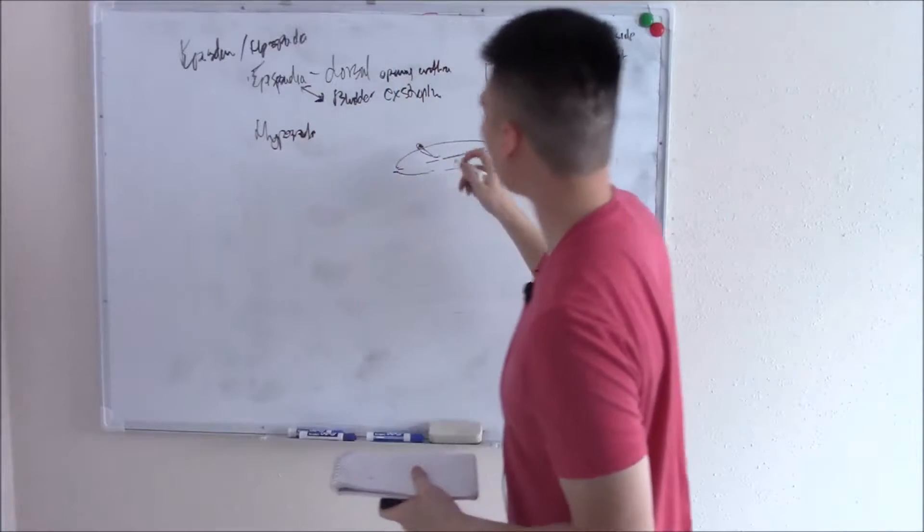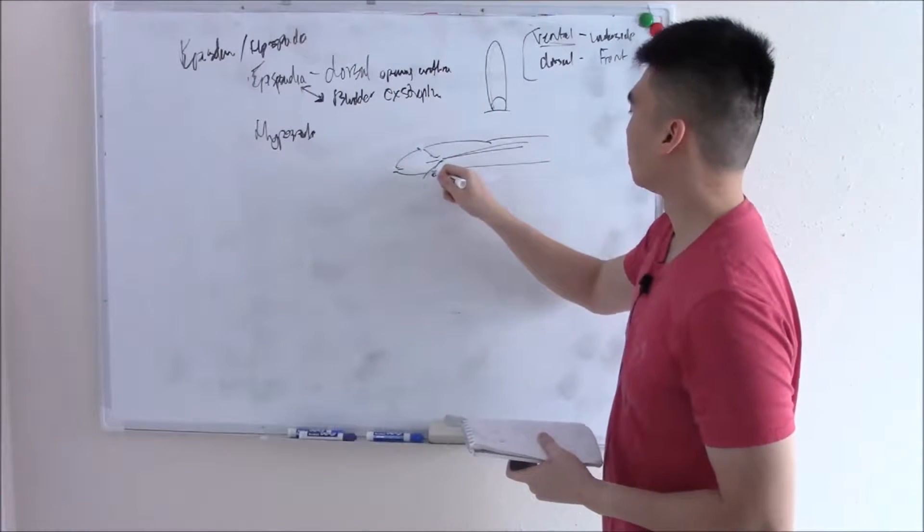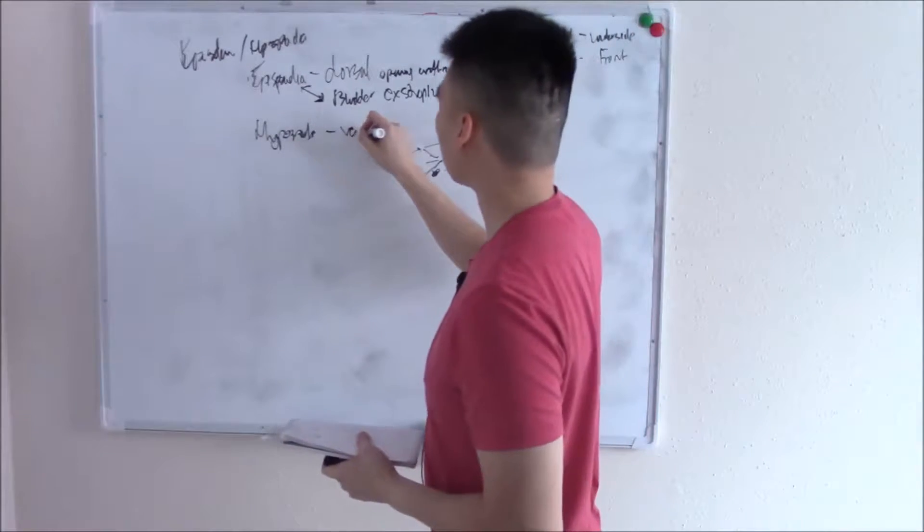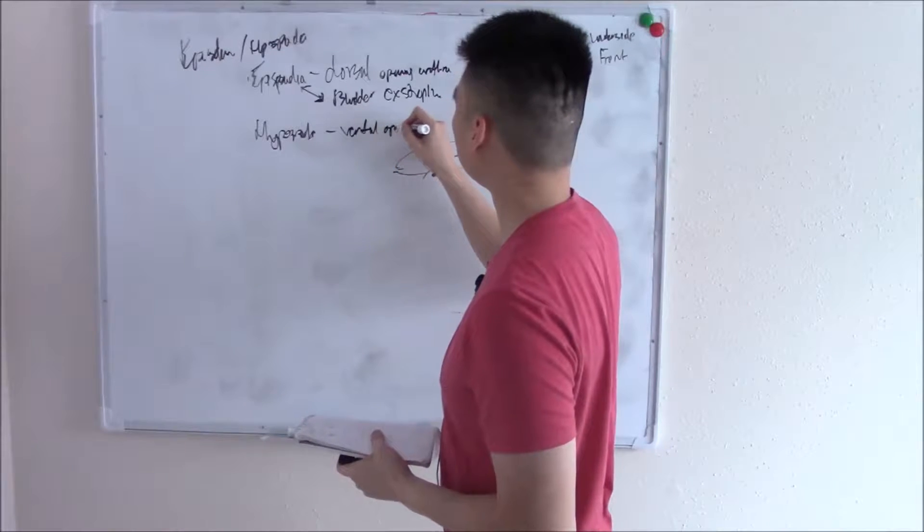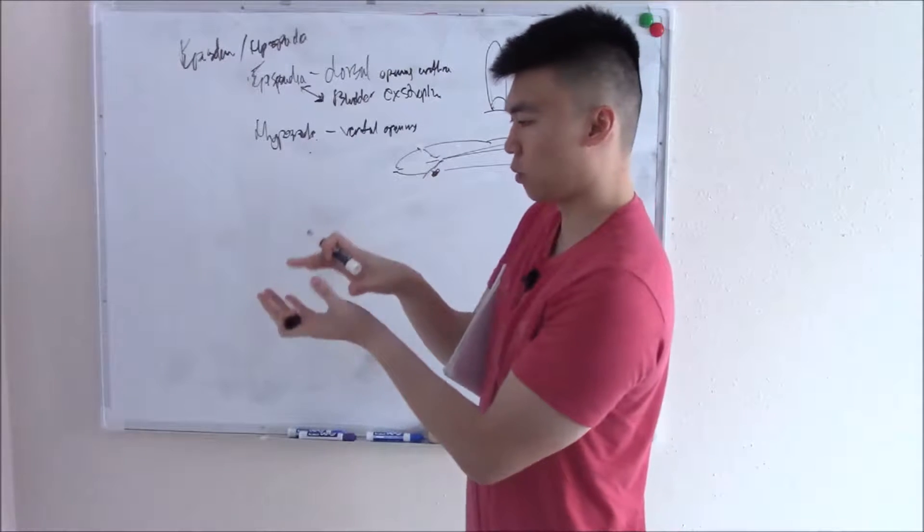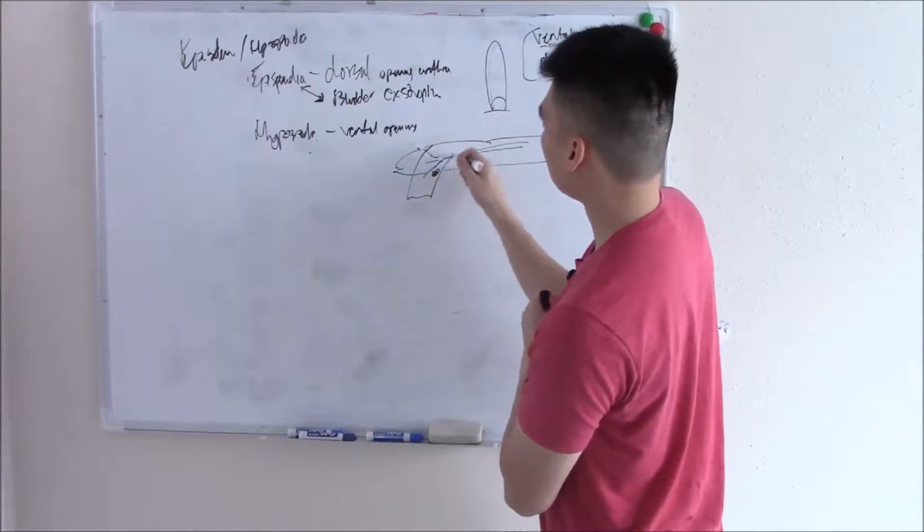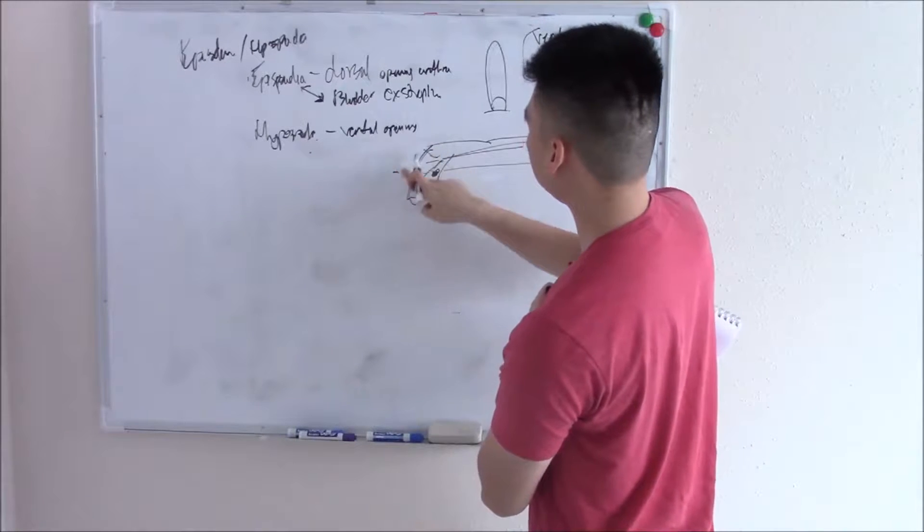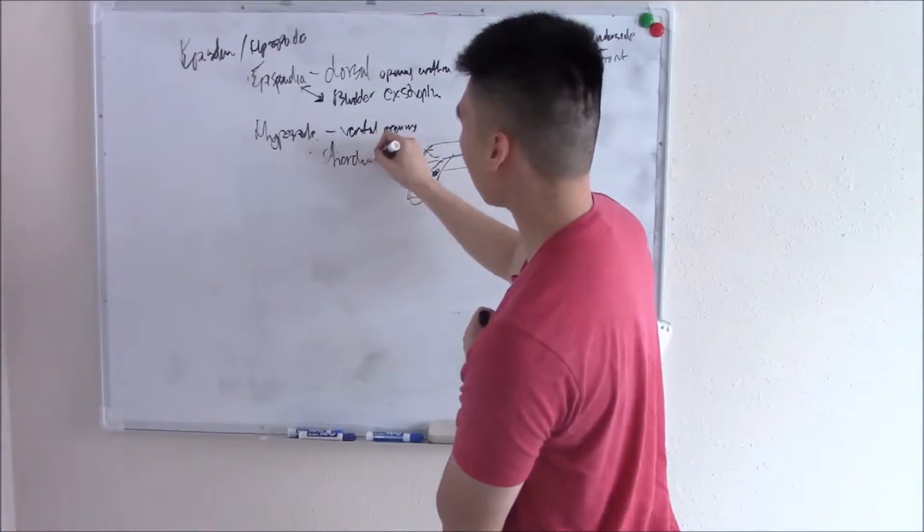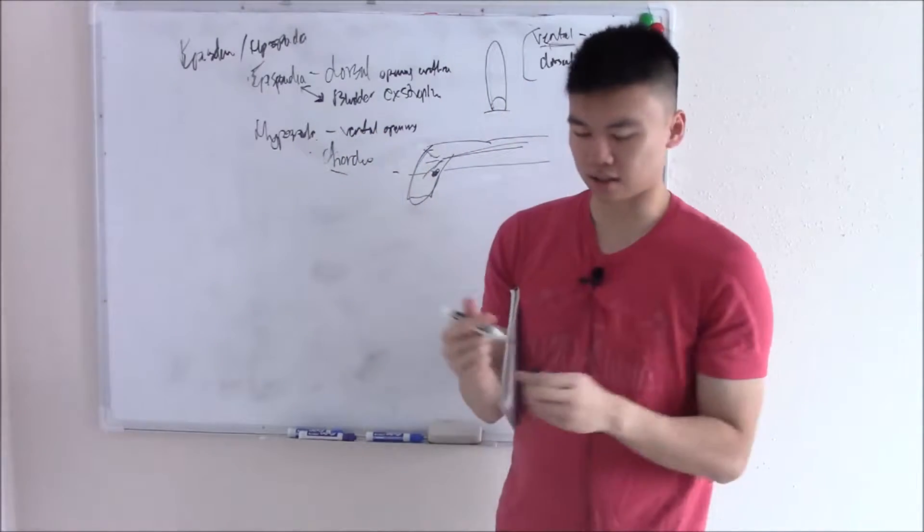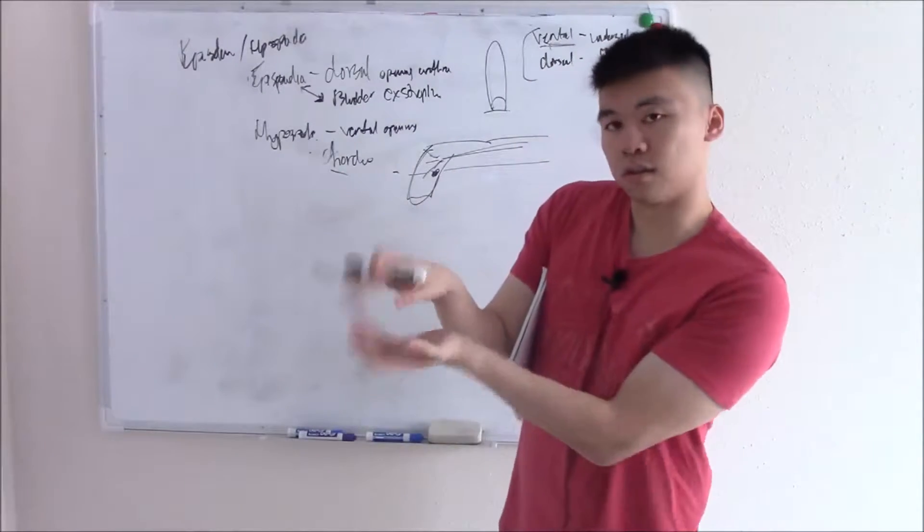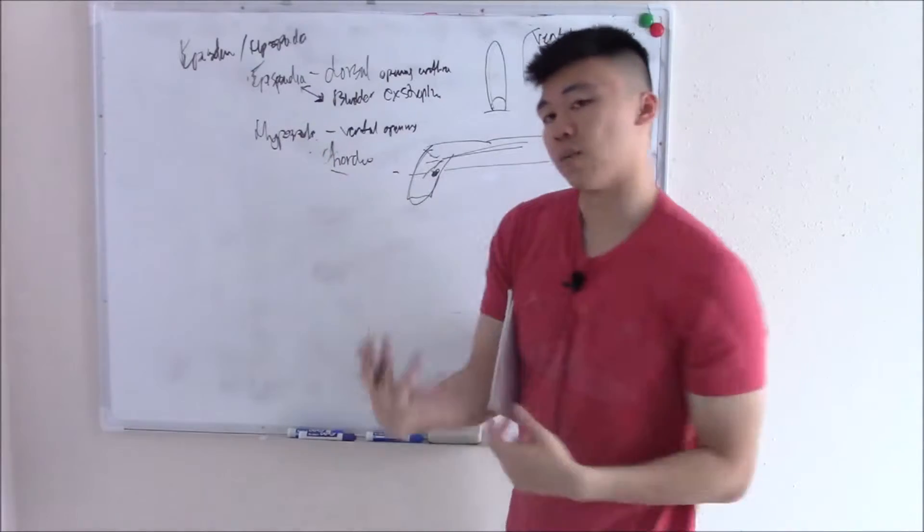Hypospadias is when your urethra opens up on the bottom of your penis, the ventral side. So ventral opening and this is associated with something too. It's associated with a downward curved penis. Your penis will look like this and we just call that chordee or cordee. I had a question about cordee. I don't remember exactly the context but they asked about cordee, which is just a downward facing penis and it's associated with hypospadias.